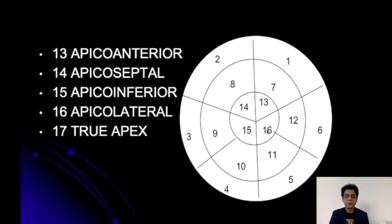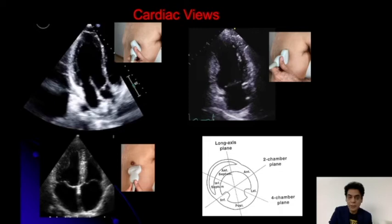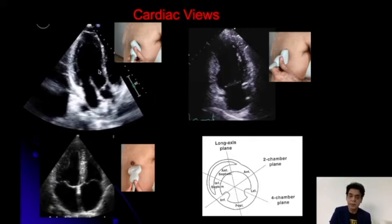Many people label another segment — that is segment number 17. We get that segment in a view which includes the apex. So that apical area is included, and we get it in longitudinal section. The apex is referred to by many as segment number 17.